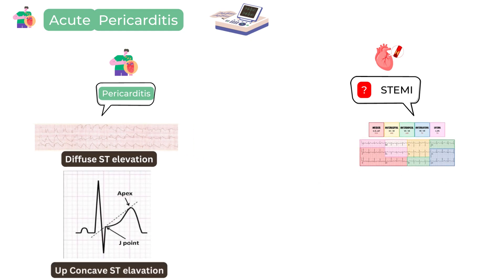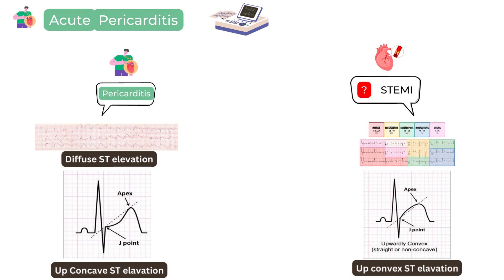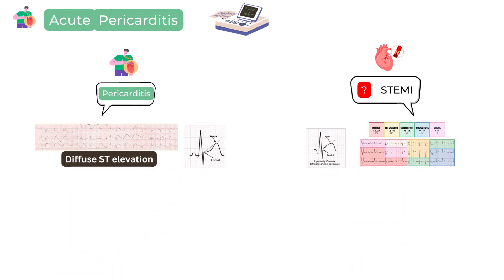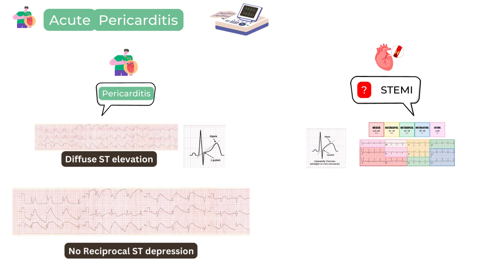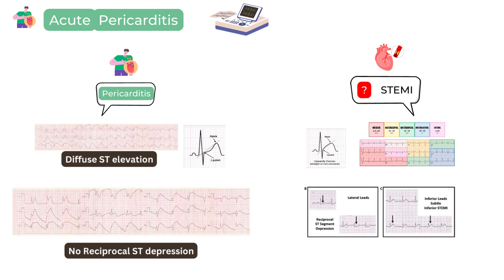Second, the ST elevation in pericarditis is typically upconcave rather than upconvex, as in STEMI. In general, the ST elevation does not exceed 4 mm in a case of acute pericarditis. Another important thing is that you would not find reciprocal ST depression in a case of pericarditis, as you would find more often in a STEMI. Finally, T-wave inversions, which frequently accompany ST elevation in the case of a STEMI, never occur in acute pericarditis. A T-wave inversion does not occur in the presence of ongoing ST elevation — it usually appears much later after the ST elevation has resolved.